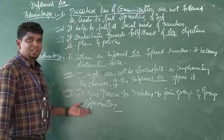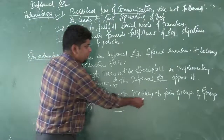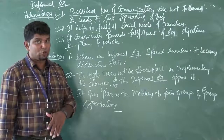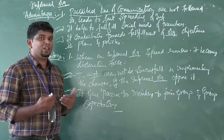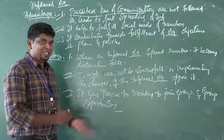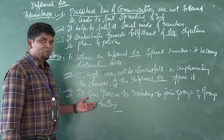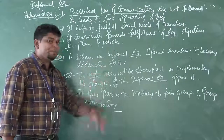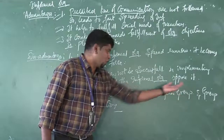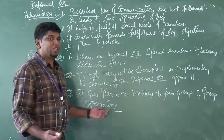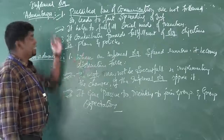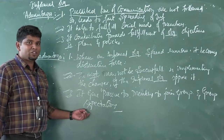Third disadvantage: it gives pressure to the members to join a group and conform to group expectations. Some people may not want to join a particular group, but if they don't, the group may not allow them to work independently. There is pressure to join and conform to group expectations — 'you should do like this, you should not do like this.' These are the three disadvantages of informal organization. We'll meet in the next class. Have a nice day, thank you.